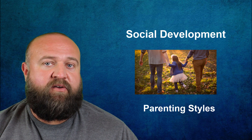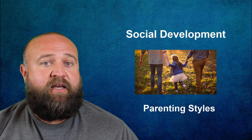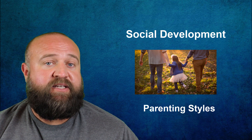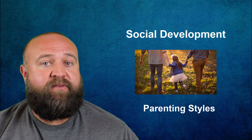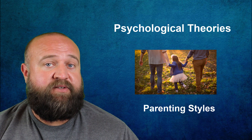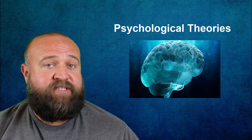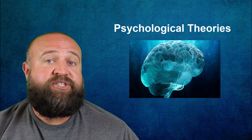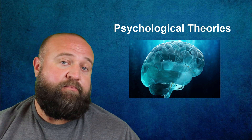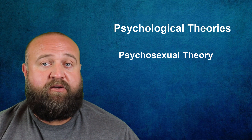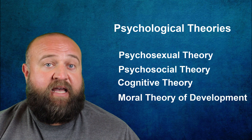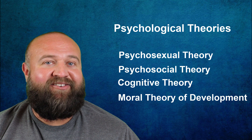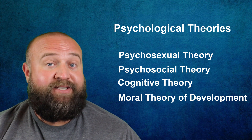The focus today is going to be on psychological theories. I'm going to give a general overview of four specific psychological theories that you usually need to know in any kind of general psychology course. The four theories are Freud's psychosexual theory, Erikson's psychosocial theory, Piaget's cognitive theory, and Kohlberg's moral theory of development. Don't think of these theories as being contradictory to one another, but rather complementary to one another.